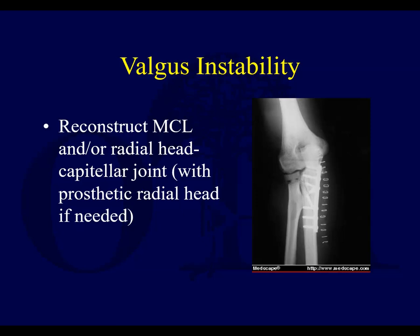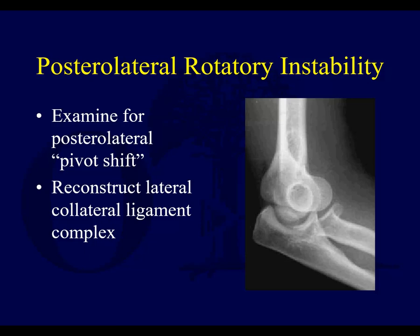When you have elbow instability, do not resect the radial head. Radial head resections can work fine for isolated comminuted radial head fractures, but not when there is elbow instability, and absolutely not if there is any sign of an Essex-Lopresti injury. Posterolateral rotatory instability occurs when the lateral collateral ligaments are out; patients may notice pain or subluxation when lifting themselves out of a chair. These are treated with reconstruction of the lateral collateral ligaments.